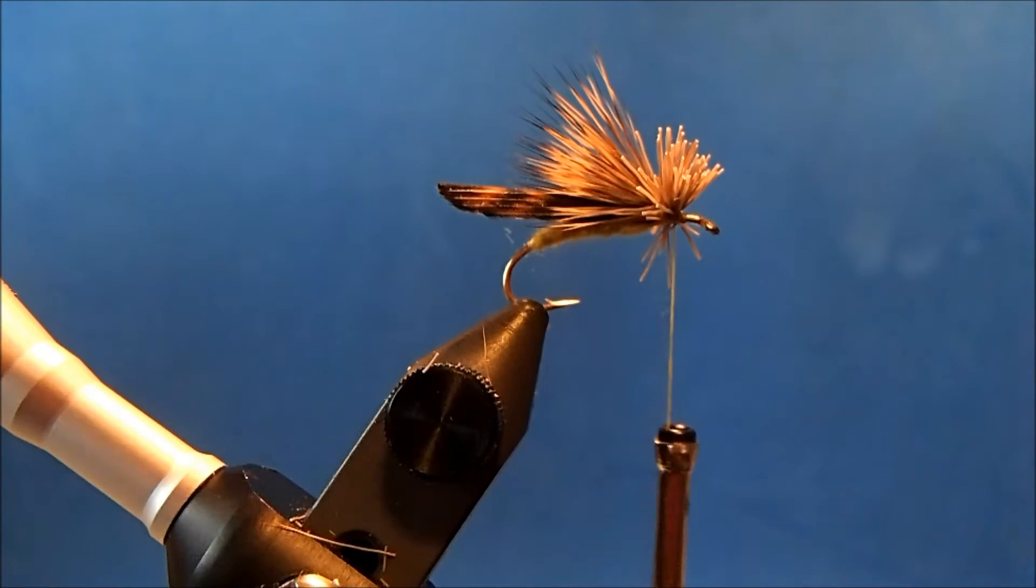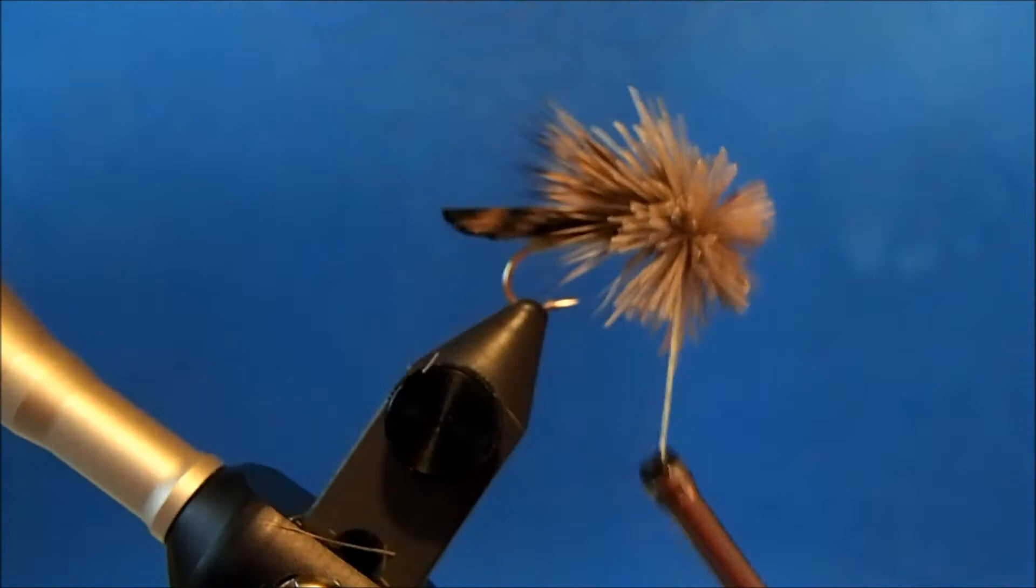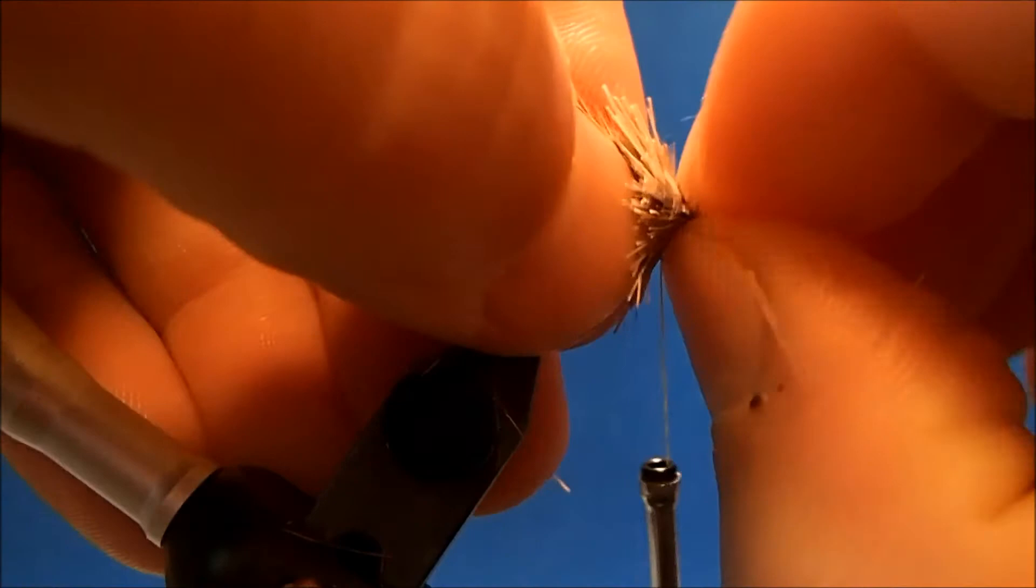And so I'll hold this at an angle, take two soft turns, pull straight down and then I'll let it spin and work my way towards the eye. And when it stops moving it's in, so I can pull this back, compress it, take some turns behind the eye.